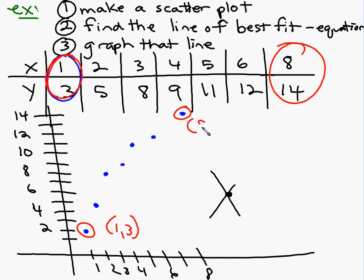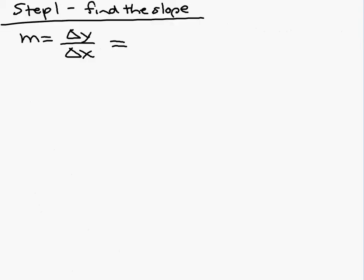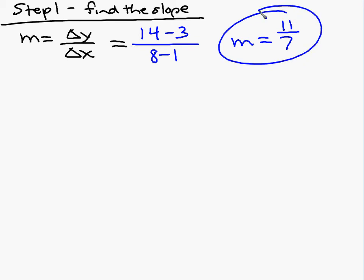This point down here is 1, 3. This point up here is 8, 14. All I have to do is subtract the Y's, which will be 14 minus 3, then subtract the X values, 8 minus 1. So what's the slope? The slope of my line of best fit is 11 over 7. Up 11 over 7. That's the first step.